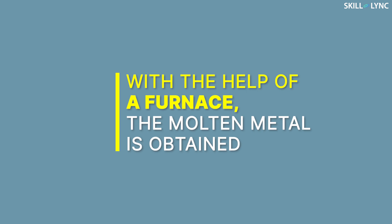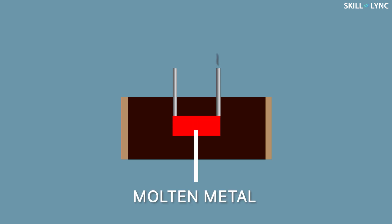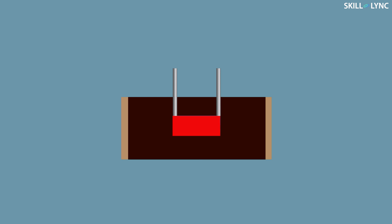After clamping, we pour the molten metal. With the help of a furnace, the molten metal is obtained. This molten metal is then poured into the mold with the help of gates and spruces. To avoid early solidification, the molten metal must be poured quickly.